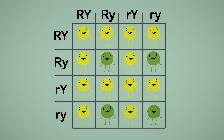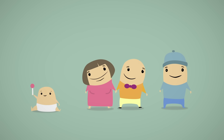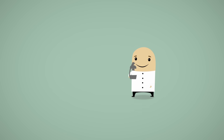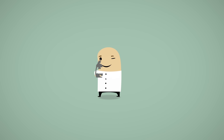And lots of things are more complicated than peas, like people. These days, scientists know a lot more about genetics and heredity, and there are many other ways in which some characteristics are inherited, but it all started with Mendel and his peas.